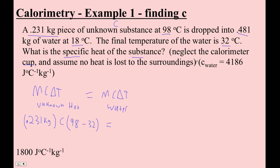And then let's see. The water is what gains it. So here's the mass of the water, 0.481 kilograms. And then we know water is 4,186 joules per kilogram degree Celsius. And then this change in temperature is 32 minus 18. And that's because it gains heat. It started at 18 and ended up at 32.